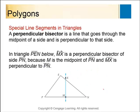A perpendicular bisector is a line that goes through the exact middle of a line segment at a right angle — so it bisects the segment into two equal halves and is perpendicular to it. For example, line MX is a perpendicular bisector because it bisects line segment PN into equal halves. If it's not splitting the segment into equal parts, it's not bisecting — it's just crossing through.